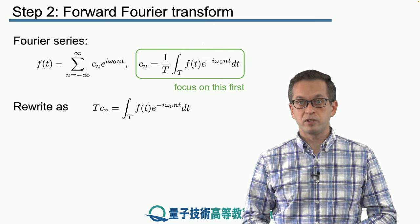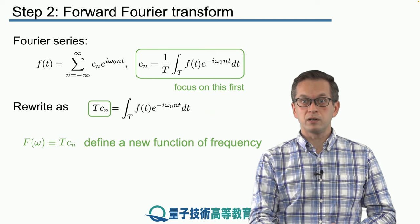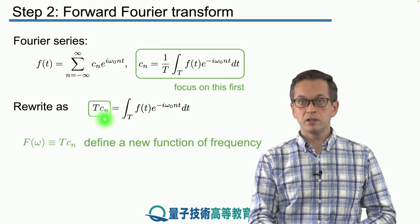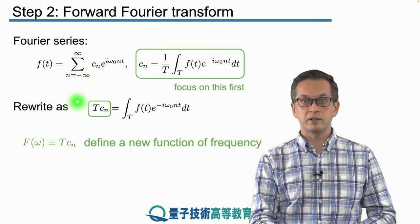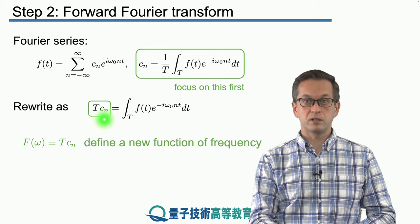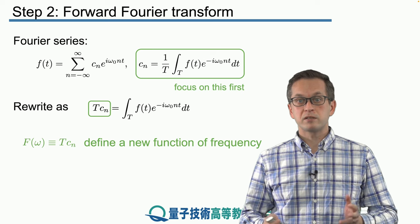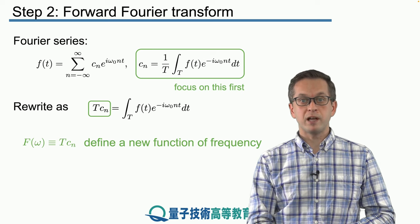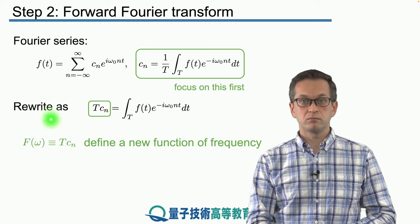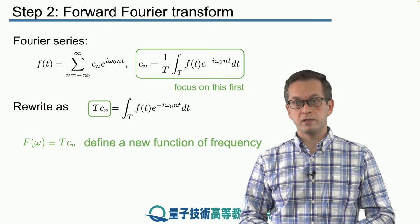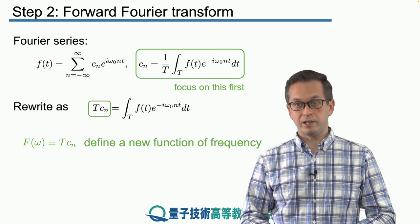Next, let's look at the different portion of our equation, and that's this left-hand side product here. Capital T, the period of the function, times cn, the complex coefficient. We can just define a new term and call it capital F of omega. For now it doesn't matter why, but you will see why we're doing this a little bit later.